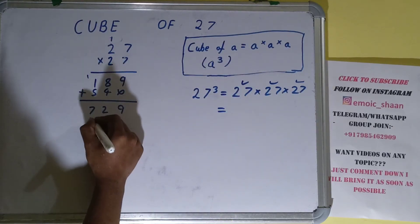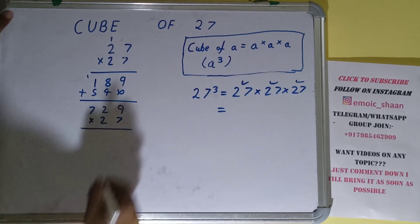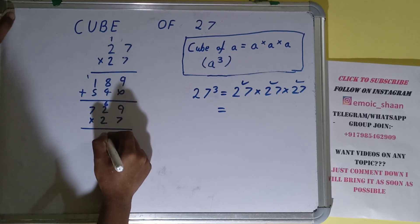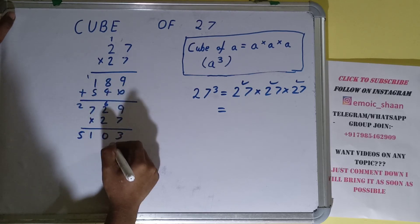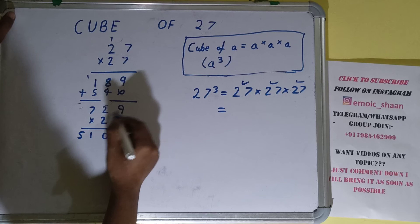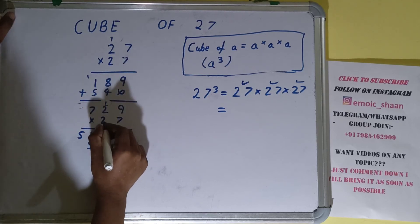7 times 9 is 63, write 3, carry 6. 7 times 2 is 14 plus 6 is 20, write 0, carry 2. 7 times 7 is 49 plus 2 is 51, write 1. Now this 2 - 9 times 2 is 18, write 8, carry 1. 7 times 2 is 14.